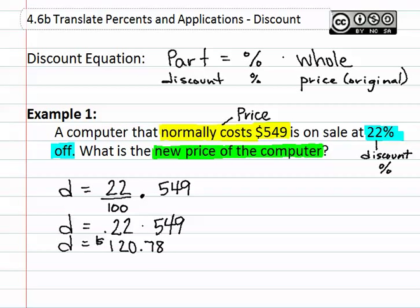When dealing with money, you always round to the hundredths or so that you have two place values for cents.